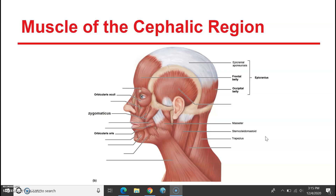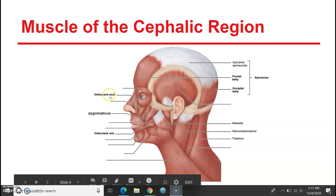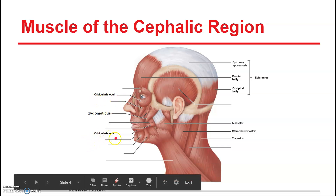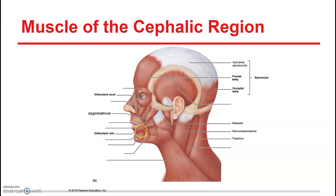We're going to start with the cephalic region. There are some facial muscles you need to know, and then some muscles that cover the scalp and the dorsal surface. We have the orbicularis oculi and orbicularis oris. Both of these muscles are circular muscles, otherwise called sphincters, which allow an opening to get bigger or smaller. The orbicularis oculi allows our eyes to close, and the orbicularis oris allows our mouth to pucker.